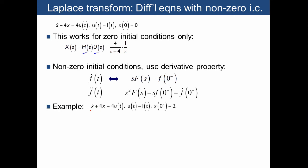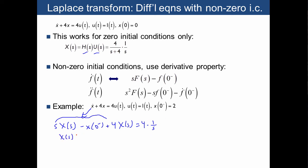For example, taking the Laplace transform of x-dot gives us s·X(s) minus x(0), and 4x gives 4·X(s), using the superposition property. On the right-hand side, we need 4 times U(s), where U(s) is the Laplace transform of the unit step function. Collecting terms gives (s + 4)·X(s), and moving the initial condition x(0) to the right-hand side, added to 4 times (1/s), allows us to solve for X(s).